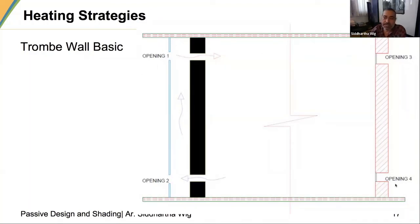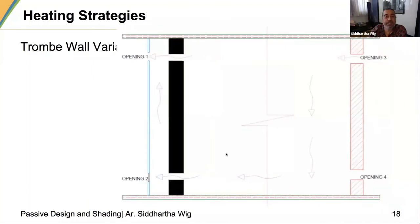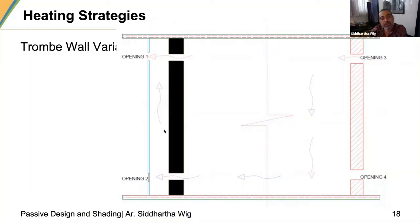Looking at the openings — labelled one, two, three and four — in case it is very hot, you can close openings three and four, allow cold air to come in through opening two and exit through opening one, ventilating the Trombe wall cavity so heat does not come into the space. Another variation: keeping opening two closed and bringing cold air in from opening four through a courtyard or area with greenery; the hot air rises and gets out, so the Trombe wall serves to evacuate hot air.